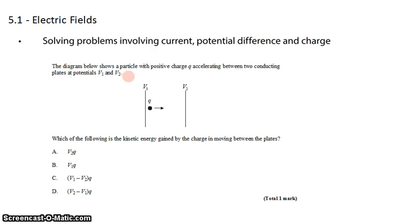The diagram below shows a particle with a positive charge Q accelerating between two conducting plates at potentials V1 and V2. And we're told to find which of the following is the kinetic energy gained by the charge in moving between the plates.